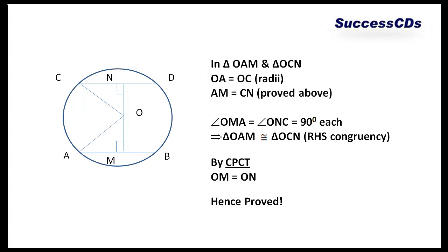Angle OMA and angle ONC is equal to 90 degrees each. Both are perpendiculars drawn. That means triangles OAM and triangle OCN are congruent to each other by RHS congruency.